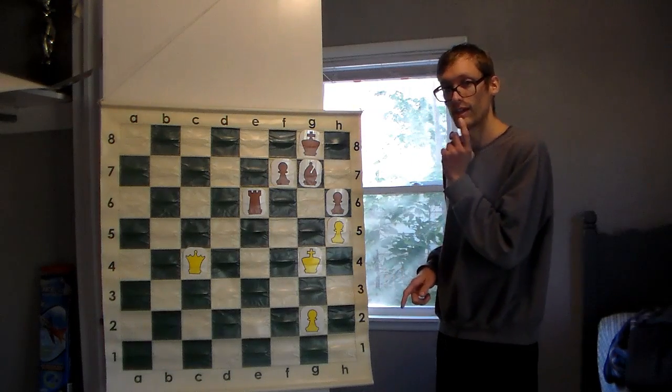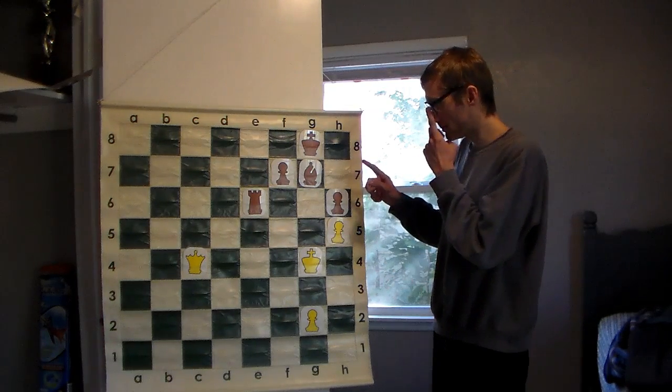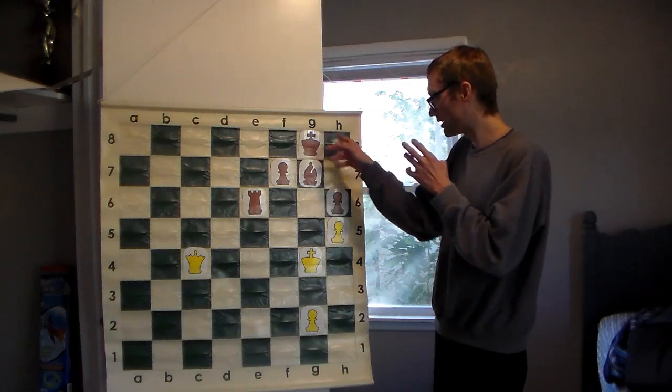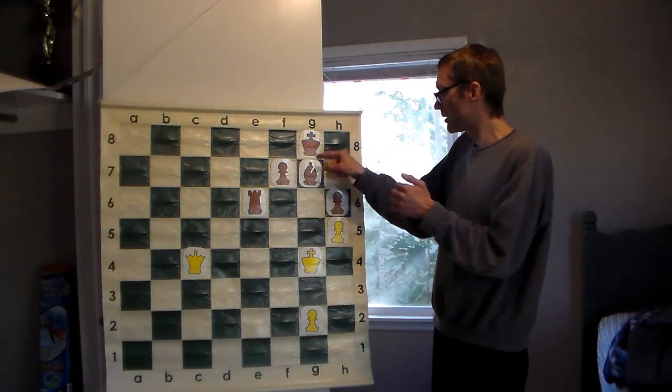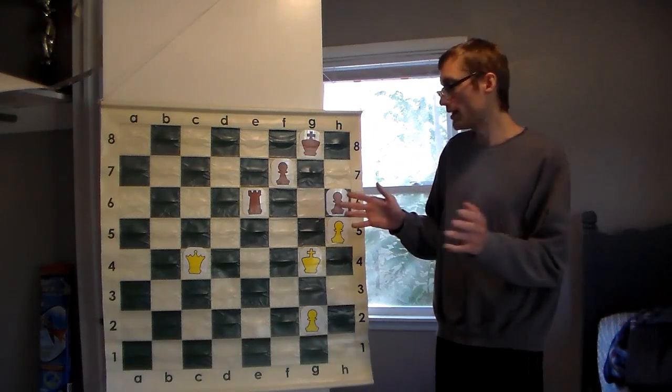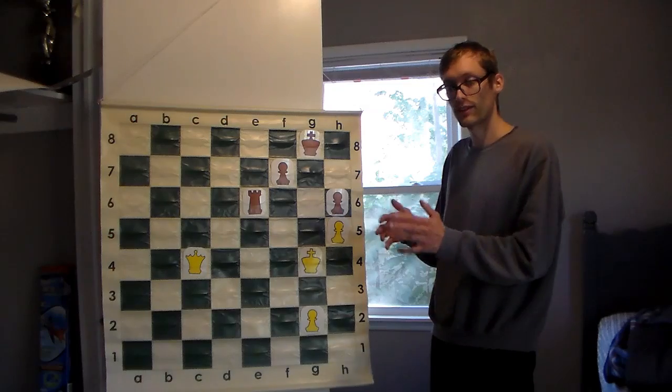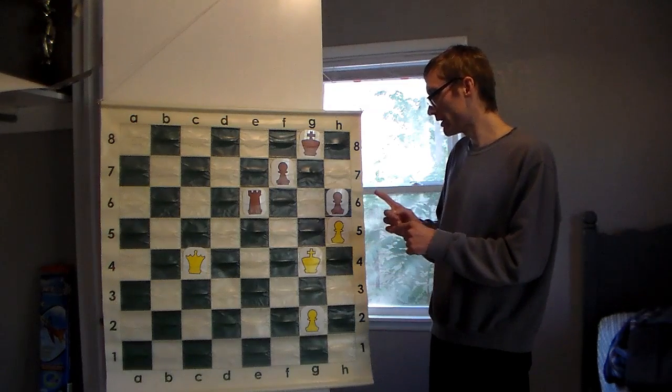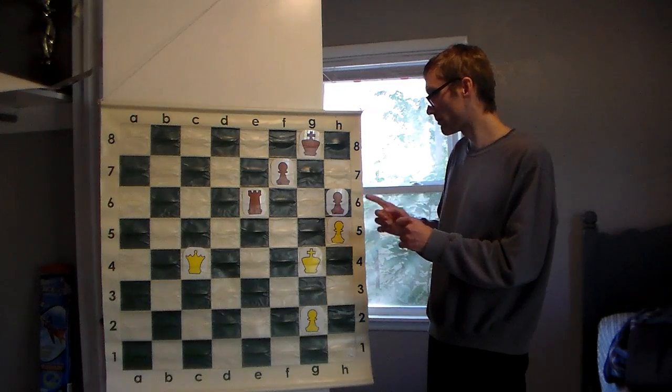Now the interesting thing here is that black could just move the King around and hold the draw. But what if we take the Bishop off the board? Now who is winning or is it still a draw? The interesting thing here is that White is completely winning now.